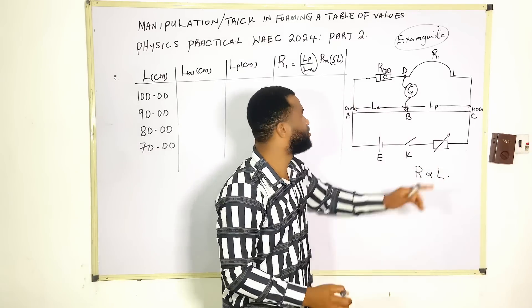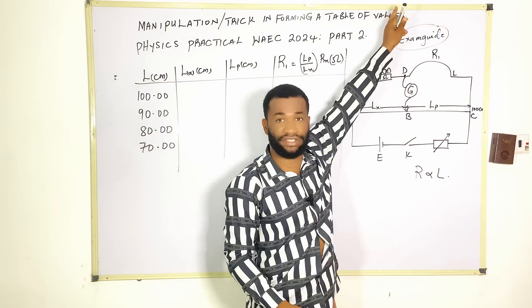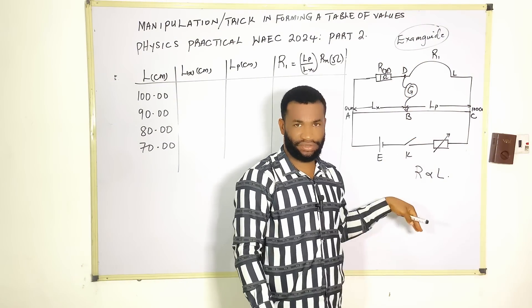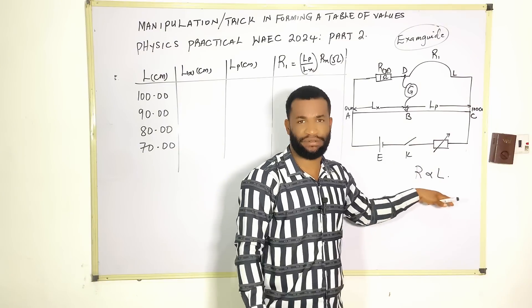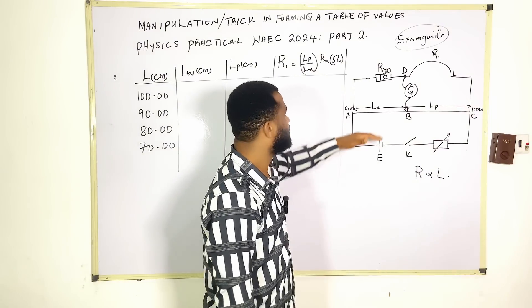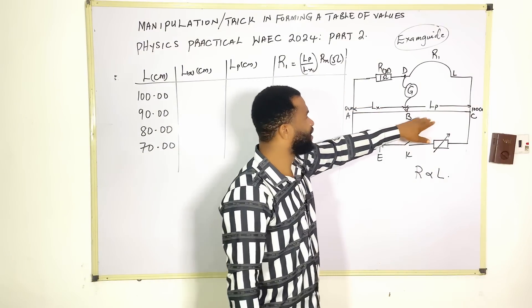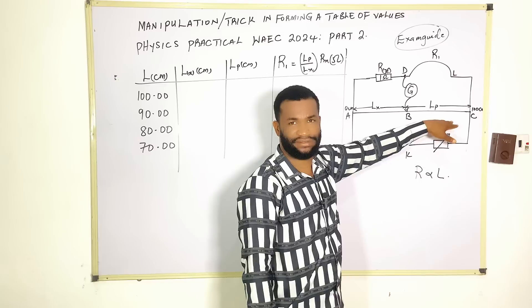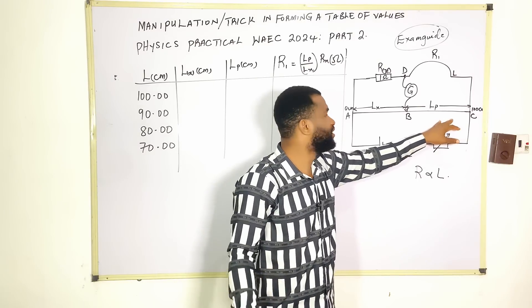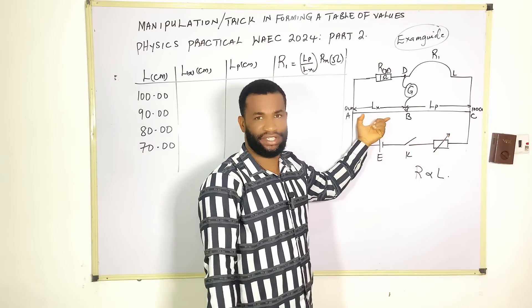Because we know that resistance is directly proportional to length, this value of lp cannot increase while lx decreases. They must be in the same direct proportion. If this value is decreasing, this value must surely increase.